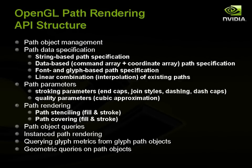Let's talk about the structure of the API. There is path object management, path object specification, setting parameters on path objects, and then the rendering operations — the stencil operation and cover operation for both filling and stroking. There are also miscellaneous operations and various queries that are very useful when building real applications.